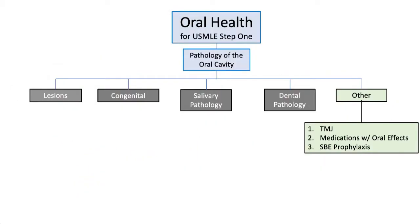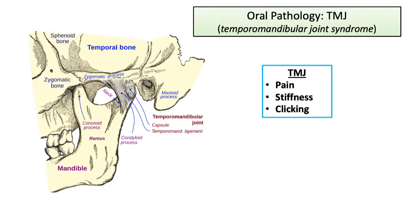Last but not least, we'll briefly review the other miscellaneous category including TMJ, medications with oral effects, and a brief mention of subacute bacterial endocarditis prophylaxis. TMJ syndrome is a disorder of the temporomandibular joint that presents with pain and stiffness of the jaw as well as clicking with jaw movement.